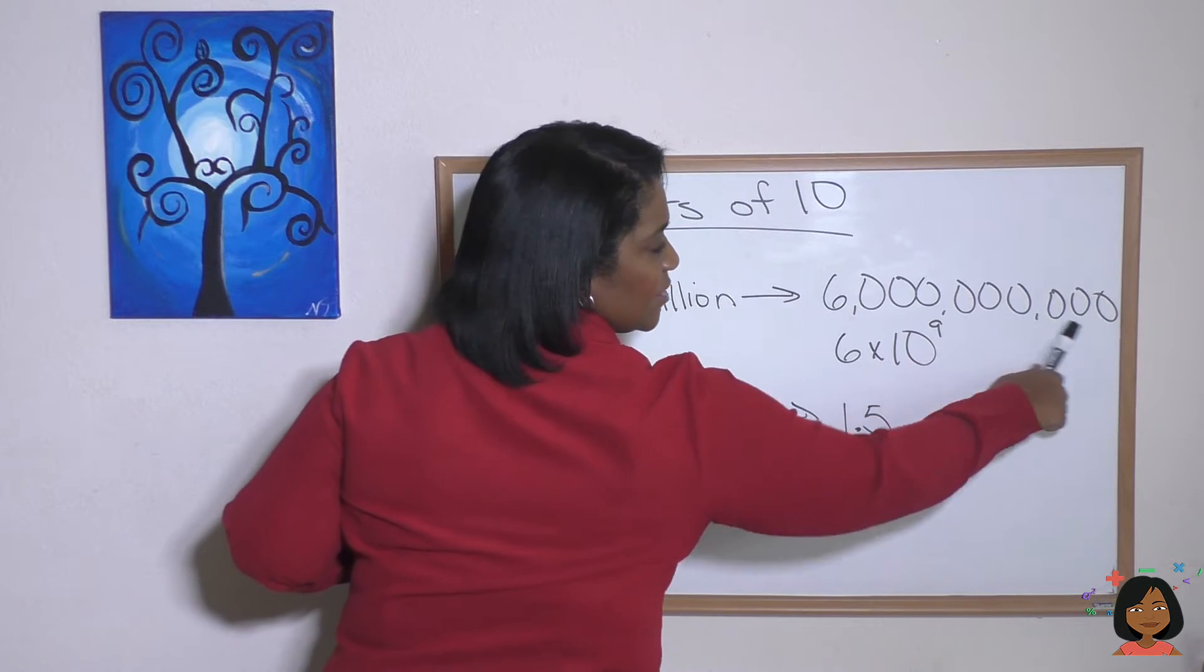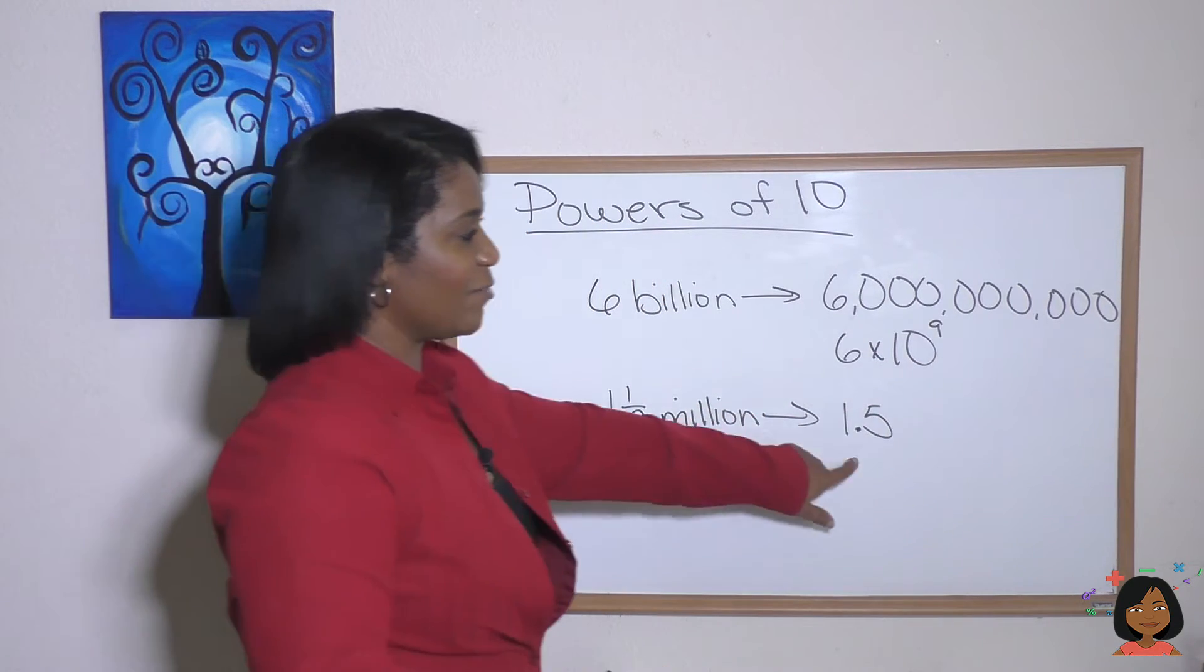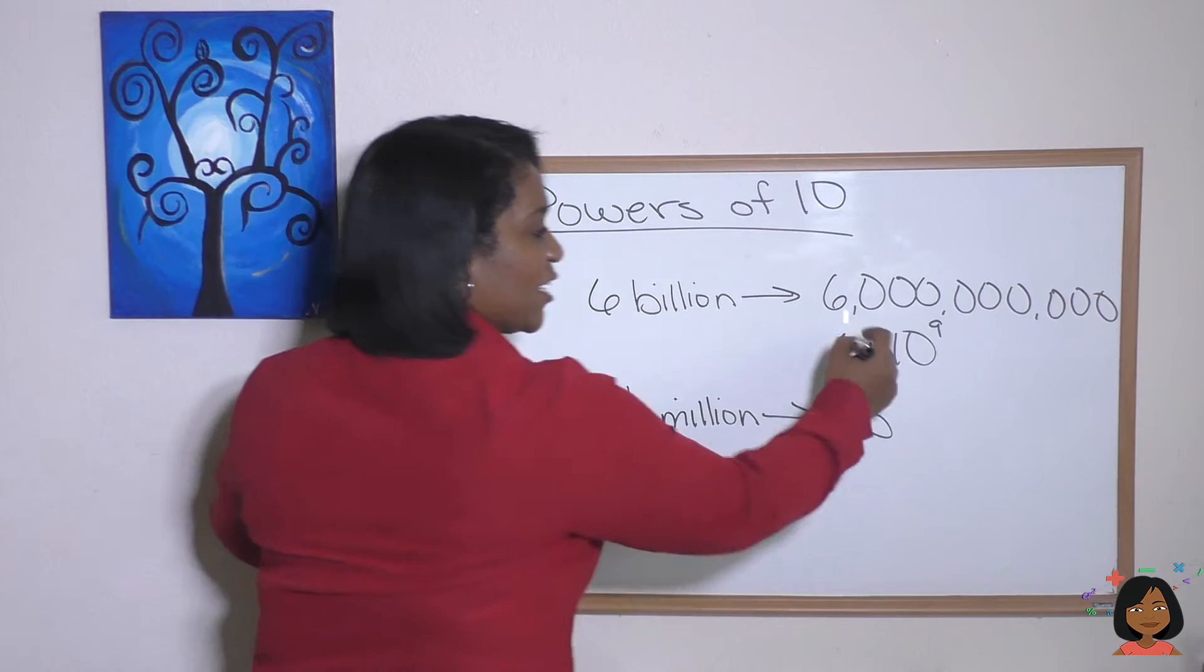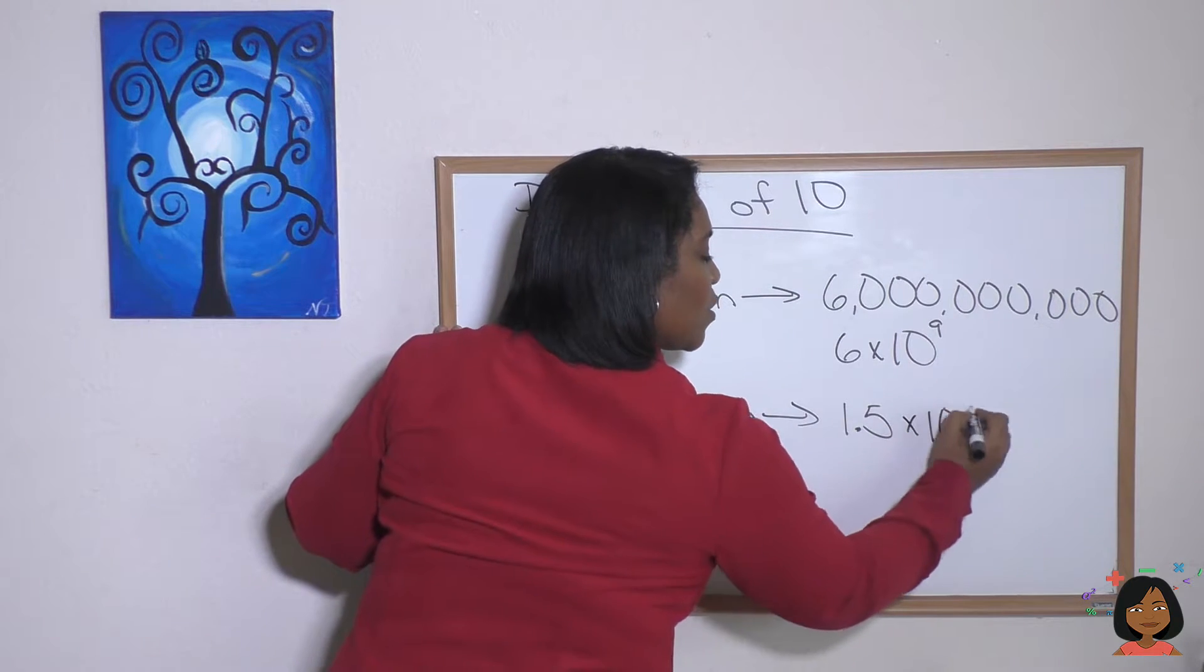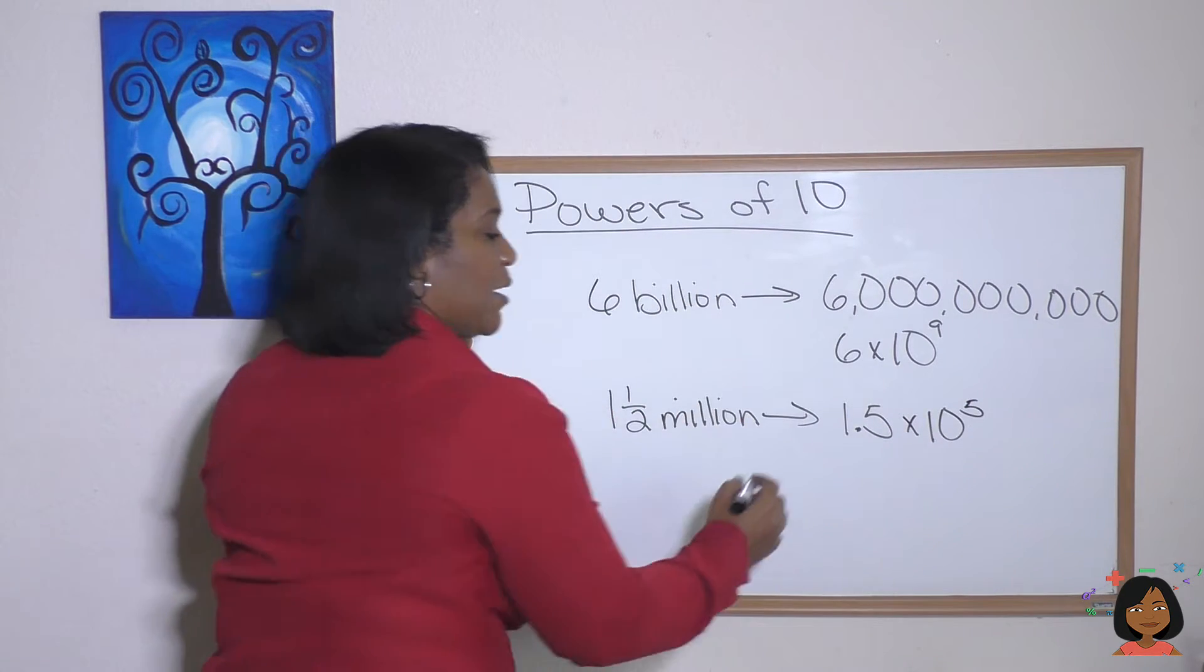So it would be 6 zeros, but one of those spots is taken up by a 5. So instead of having 6 zeros, we're going to have 5. Okay, here's what I mean.